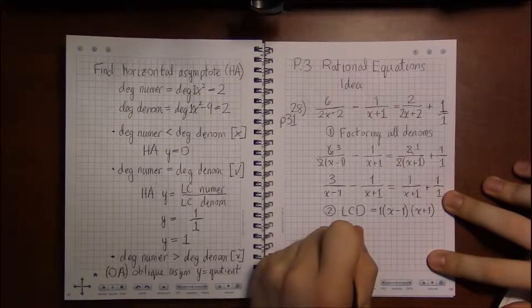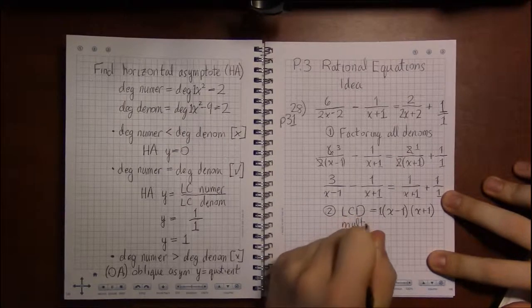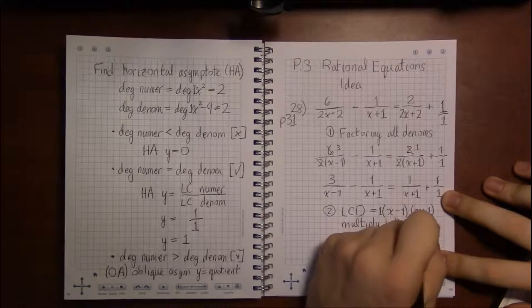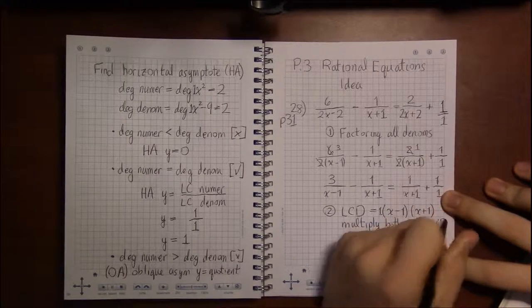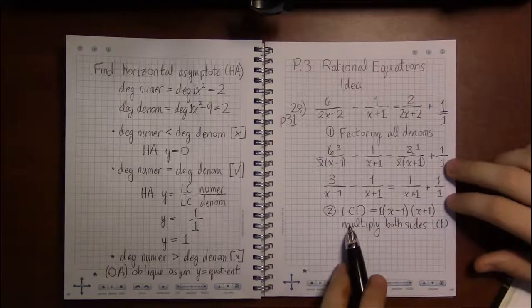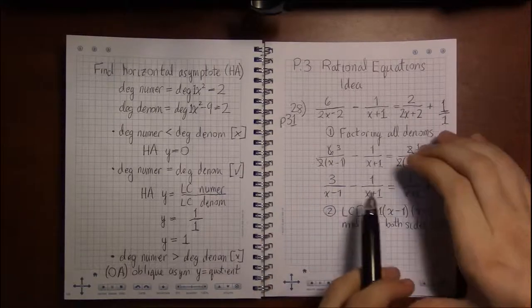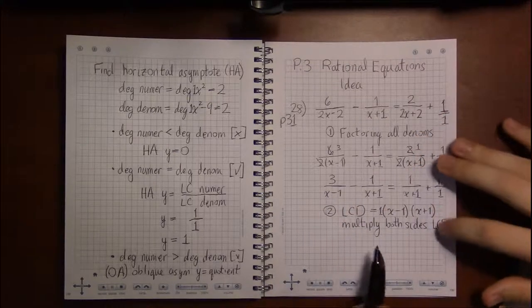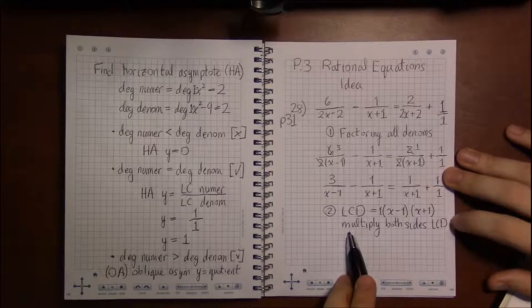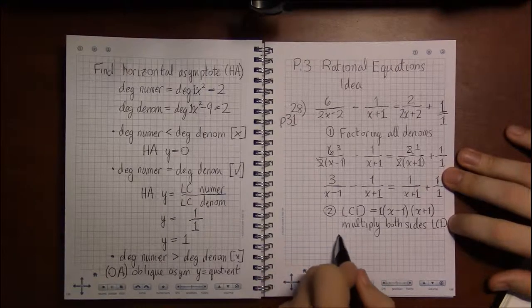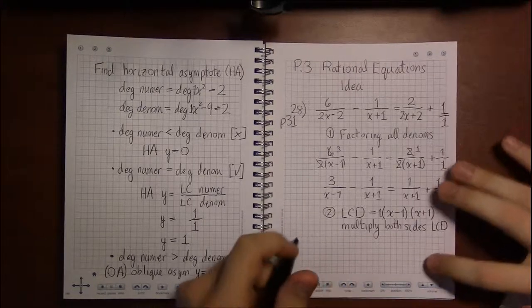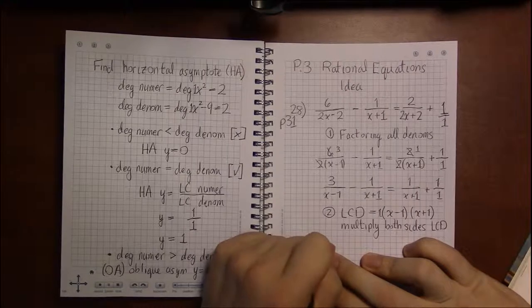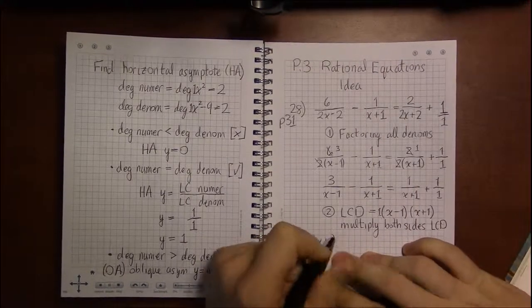And once we have it, we're going to multiply both sides by the least common denominator. Now there's another way around this problem, around all rational equations. That's to move everything to one side, combine fractions, factor, cancel, set the numerator equal to zero, and you're done. But this way, I think students tend to prefer because we're going to get rid of these ugly fractions. Fractions are rather hard to work with, and we'd like to get rid of them as soon as possible.